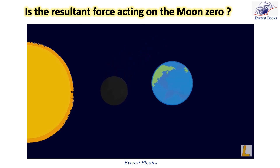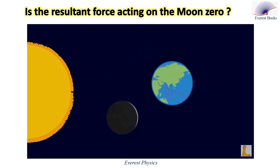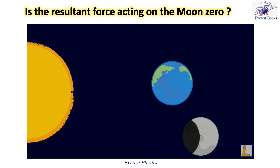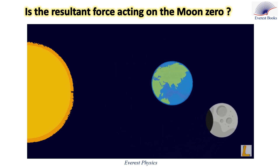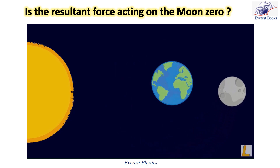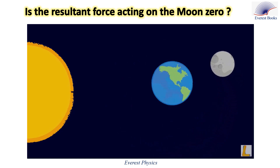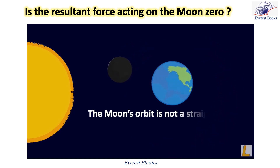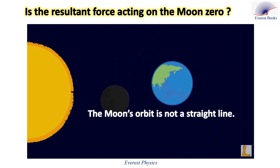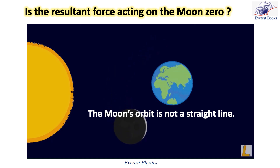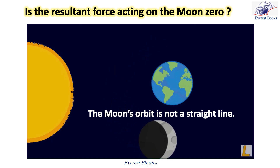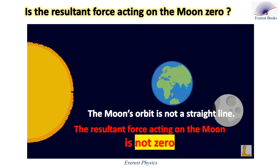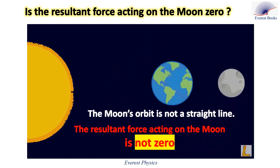Is the resultant force acting on the moon zero? The resultant force acting on a moving object is only zero if its velocity is constant. The moon's orbit is not a straight line, so its velocity cannot be constant. Therefore, the resultant force acting on the moon is not zero.